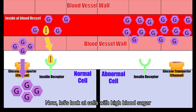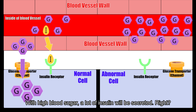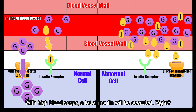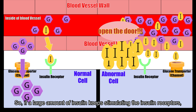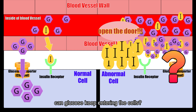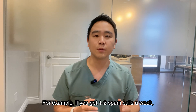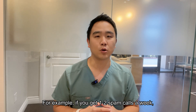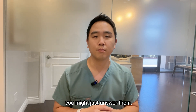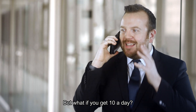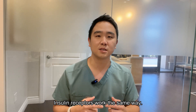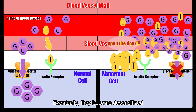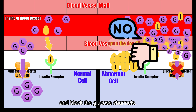Now let's look at the cell with high blood sugar and abnormal insulin response. With high blood sugar, a lot of insulin will be secreted. So if a large amount of insulin keeps stimulating the insulin receptors, can glucose keep entering the cells? For example, if you get 1 or 2 spam calls a week, you might just answer them. But if you get 10 a day, you probably block the numbers. Insulin receptors work the same way — eventually, they become desensitized and block the glucose channel.